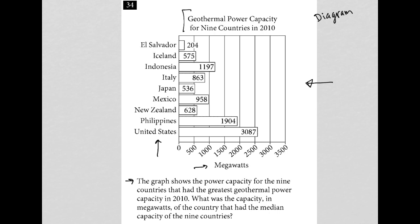The question asks: what was the capacity in megawatts of the country that has the median capacity of the nine countries? So in essence, we're just trying to find the median data point out of the nine values from the nine countries that we have here.